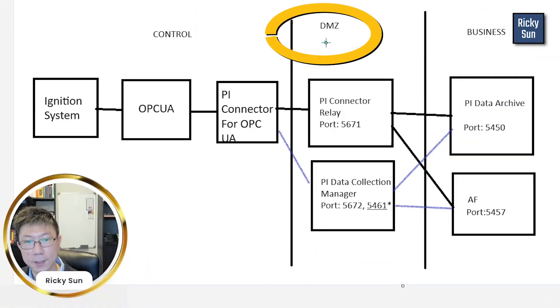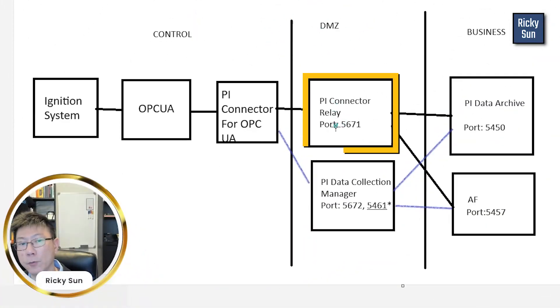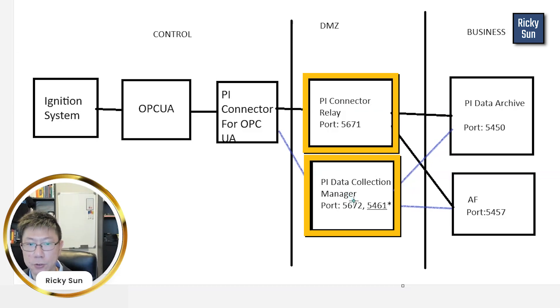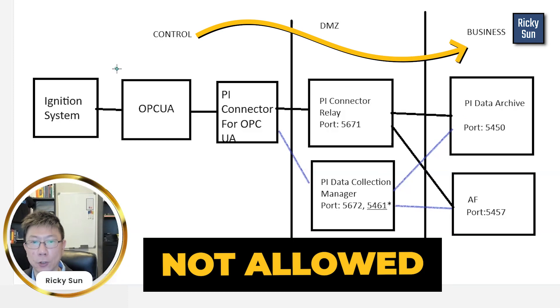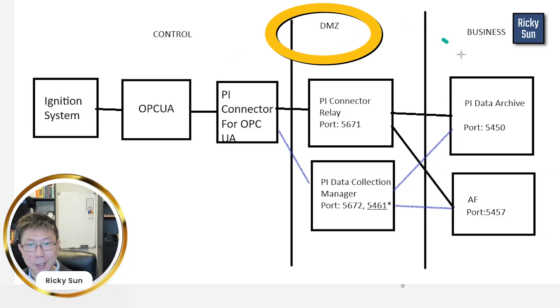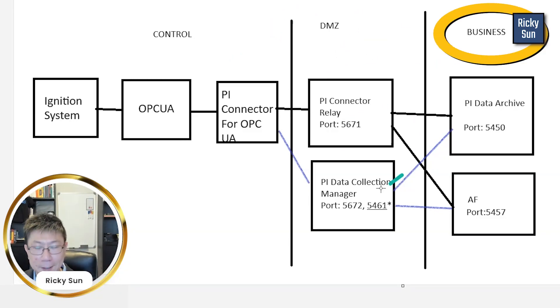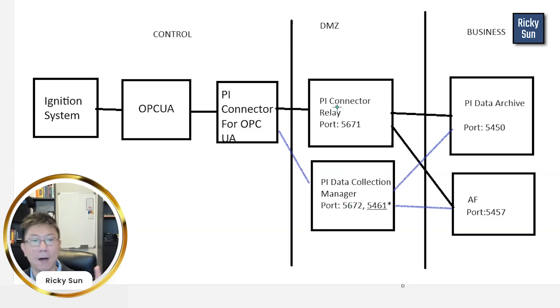It can connect. The middle is the DMC. We installed the connector relay and the data collection manager on the DMC because I don't want to put it in the business network — IT will not allow us to bridge between the control network and the business network. Opening the firewall between them needs a lot of paperwork and approval, so we have to do it in stages. That's why we hop to DMC and then from DMC to business.